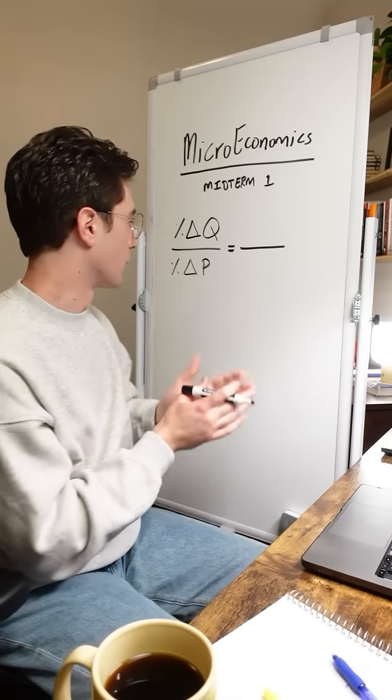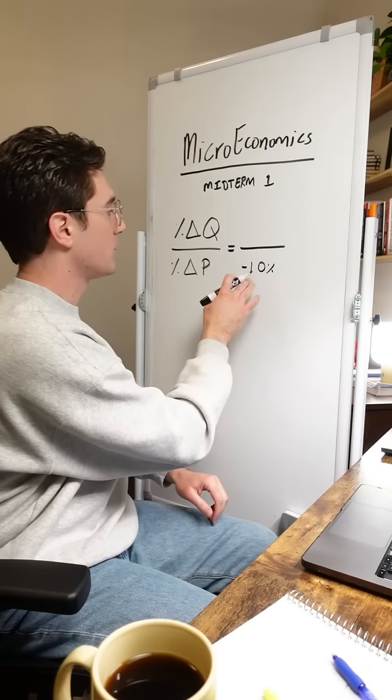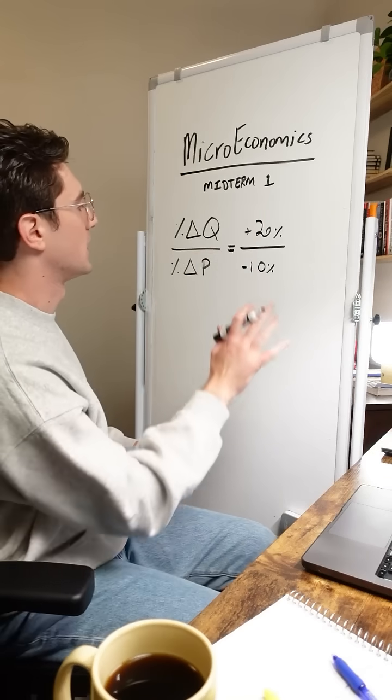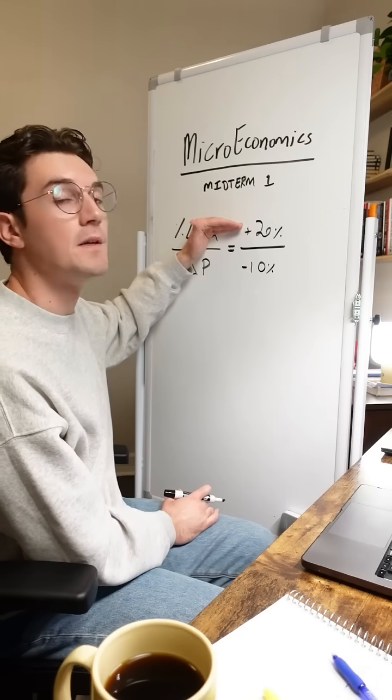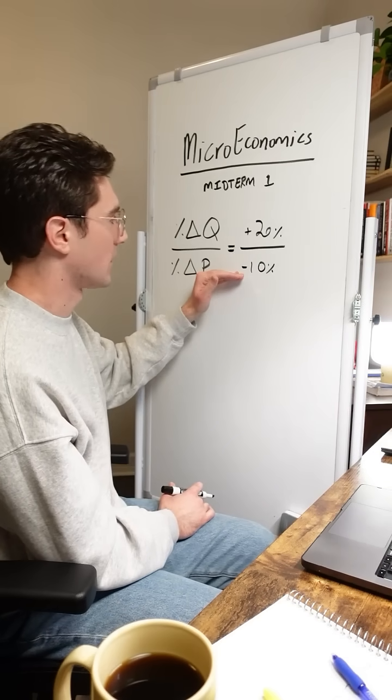Let's say we've got a scenario here where price falls by 10% and the quantity demanded by consumers due to this price decrease increases by 20%. Just looking at this, we can see that consumers' percent change in quantity demanded changed by more of an absolute value than the percent change in price.